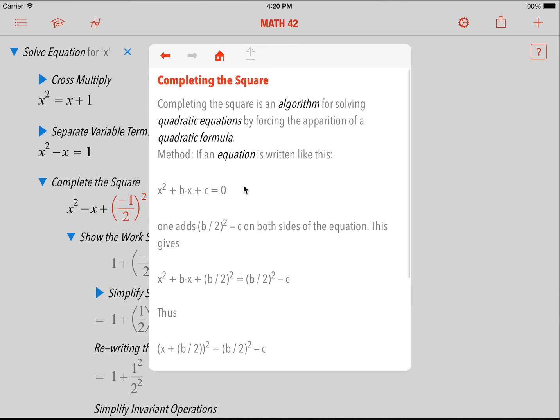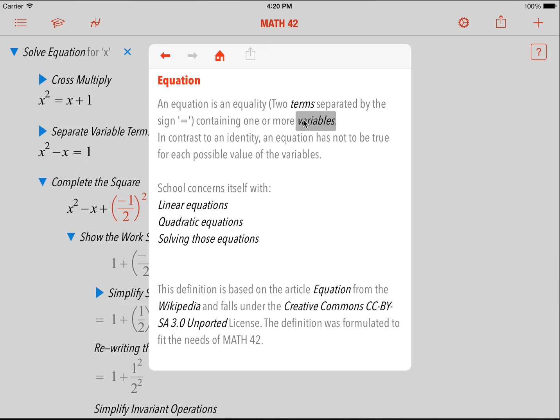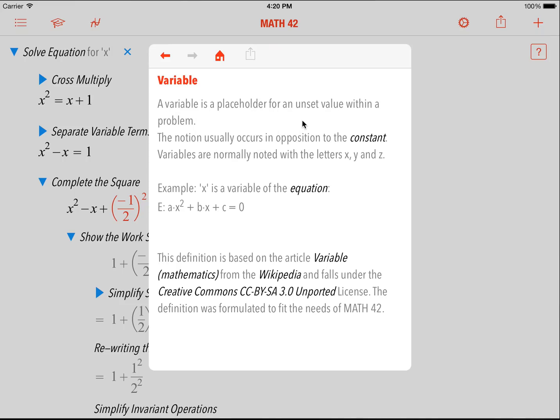And if I don't understand a notion within this explanation, I can click, for example, on equation, on variables, and go deeper and deeper into it if I really want to understand it. What this means is that we basically have a math textbook behind this. A gigantic math textbook.